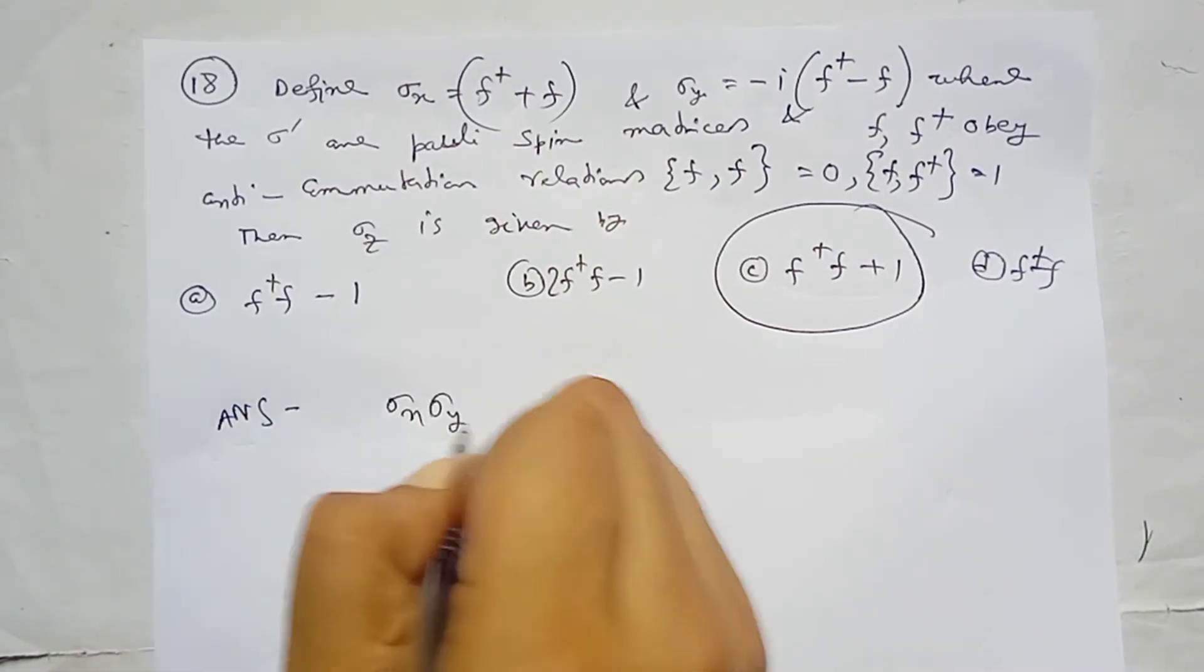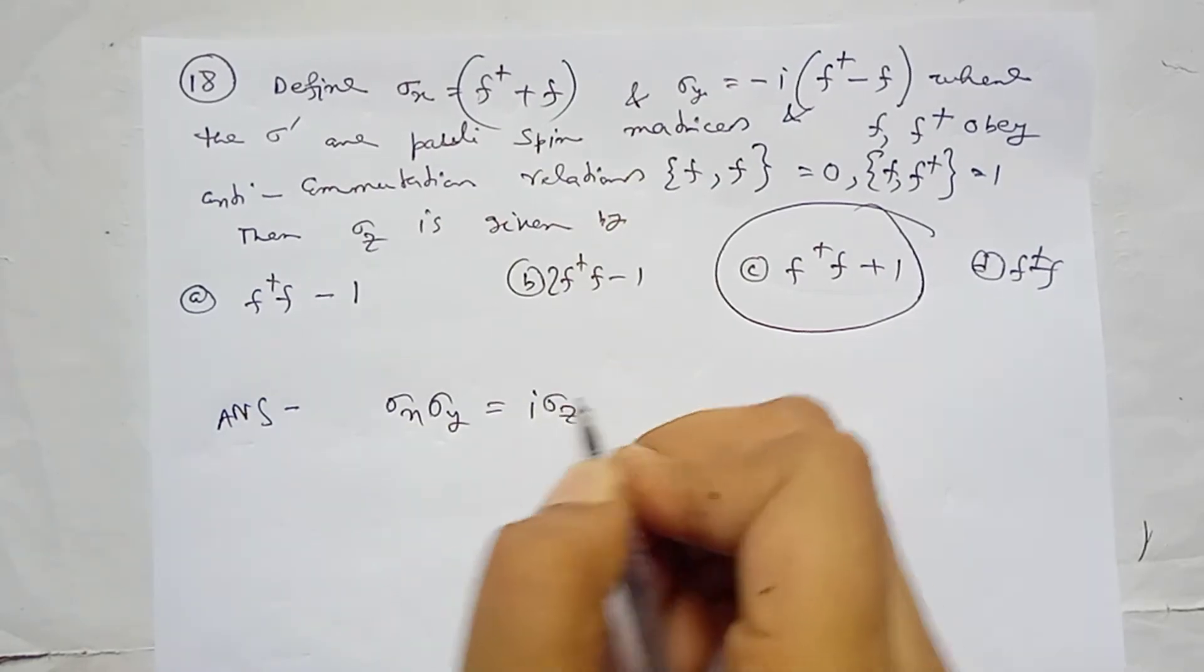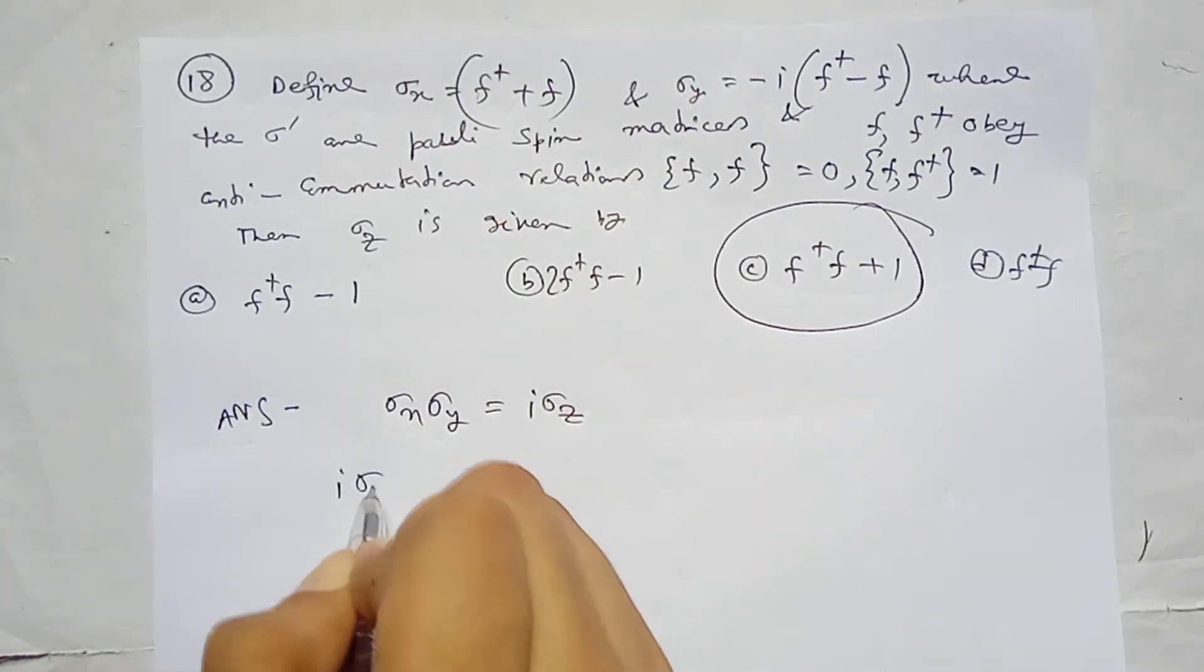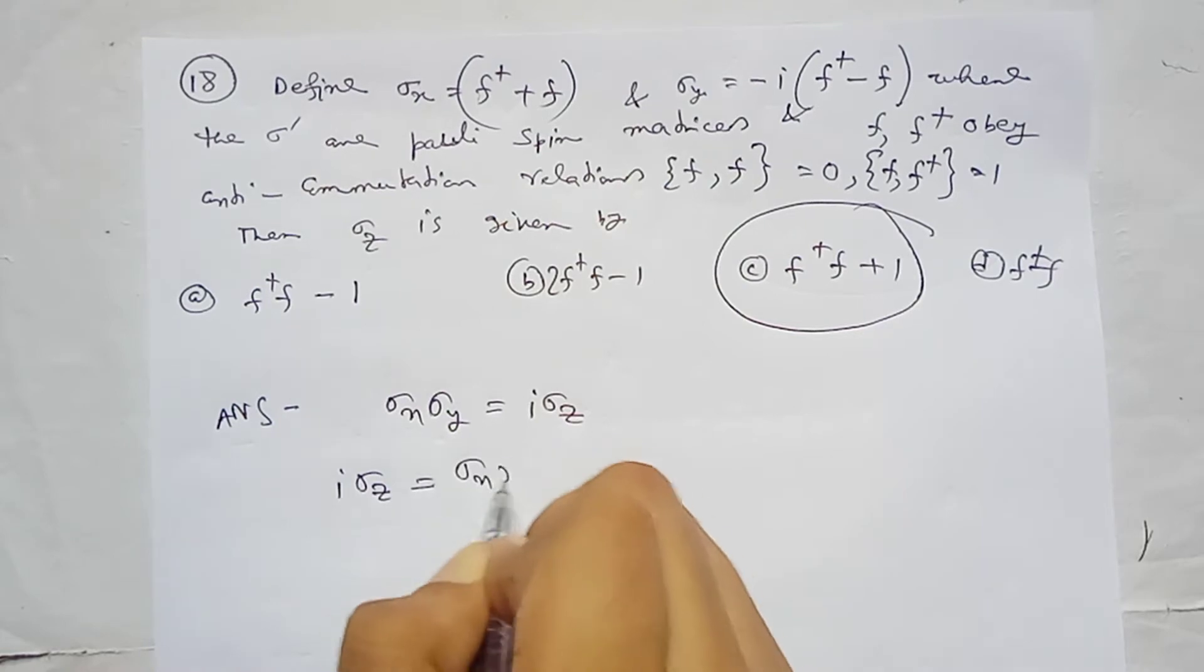Sigma x sigma y is i sigma z, so i sigma z equals sigma x sigma y.